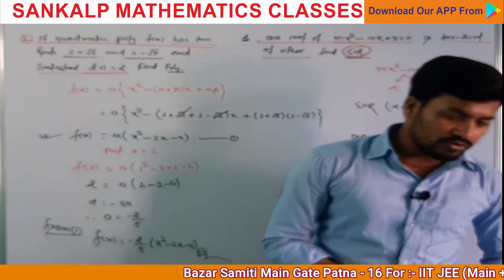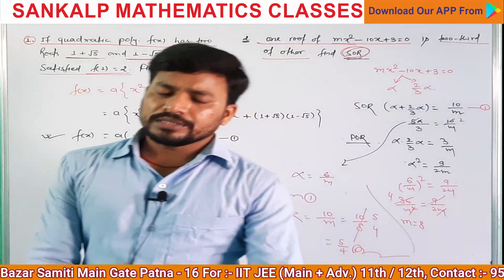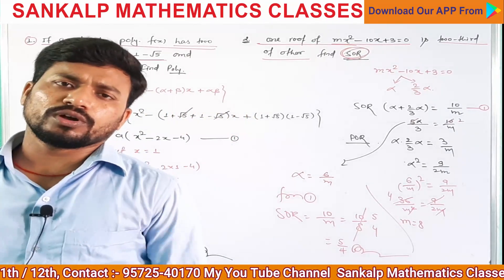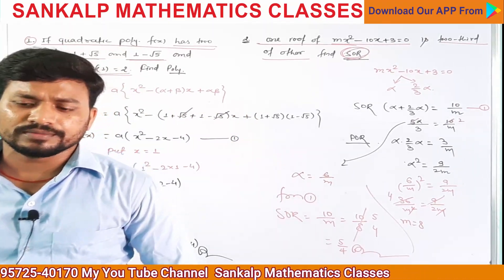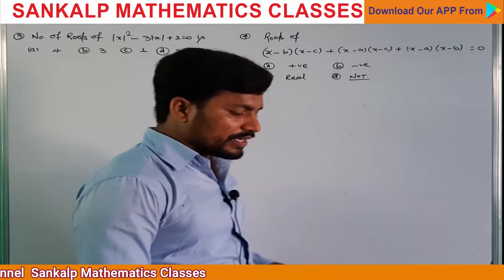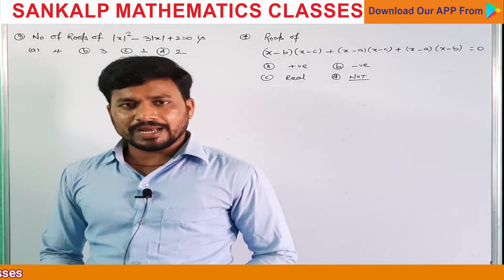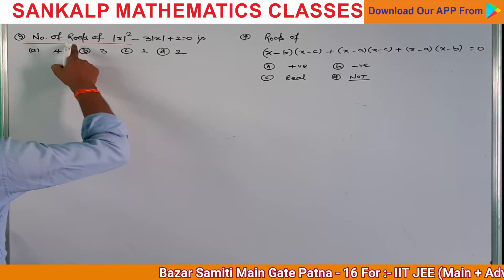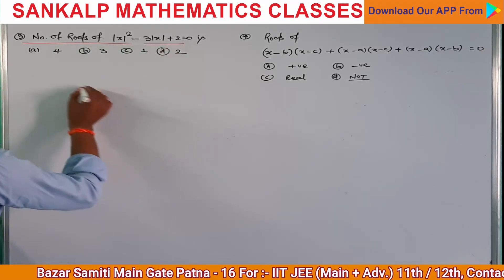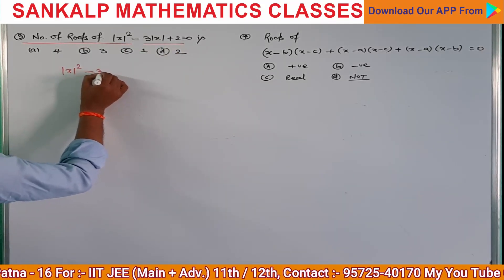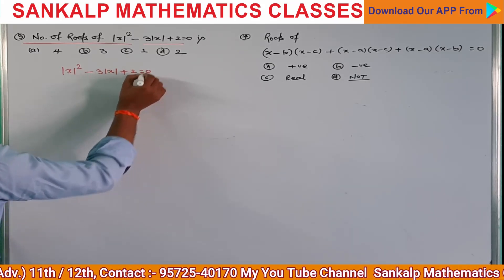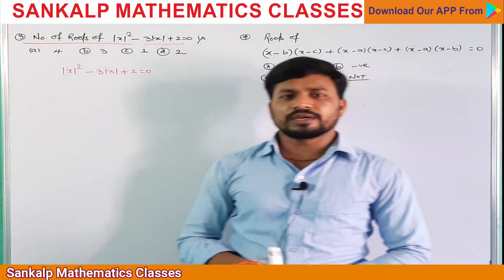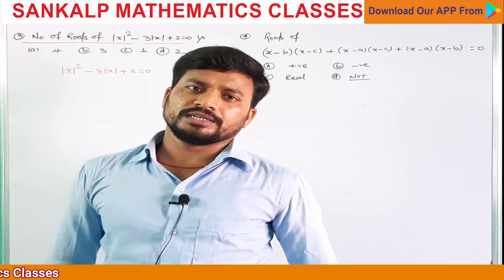आप लोग इन दोनों questions को देखे हो। Easy question है, simple question है। बच्चों, अगला question: number of roots of equation |x|² + 3|x| + 2 = 0 क्या होंगे।